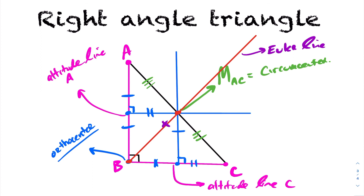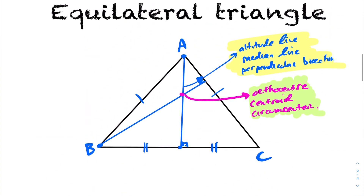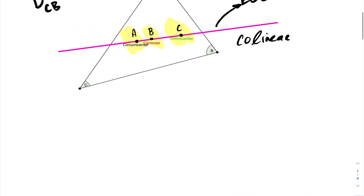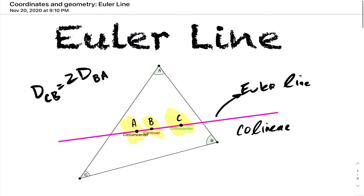That concludes the Euler line. We covered special cases for right-angle triangles and equilateral triangles, along with some general properties. Remember: the centroid lies in the middle and is twice as far from the orthocenter as it is from the circumcenter. All three centers — the orthocenter, centroid, and circumcenter — lie in the same line. They're collinear, and that line is called the Euler line.